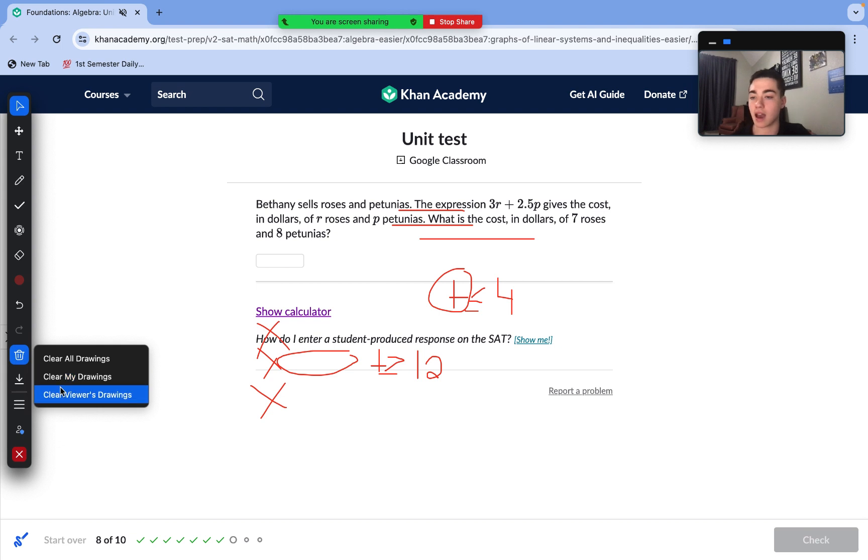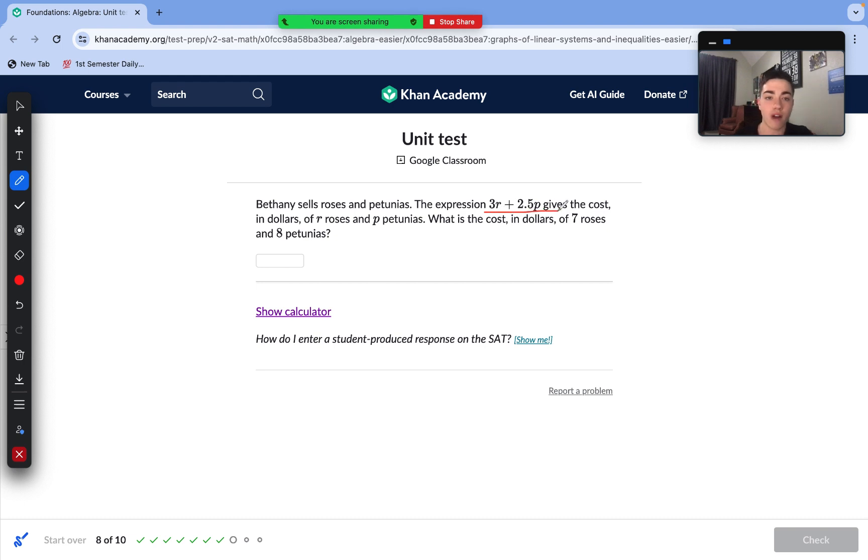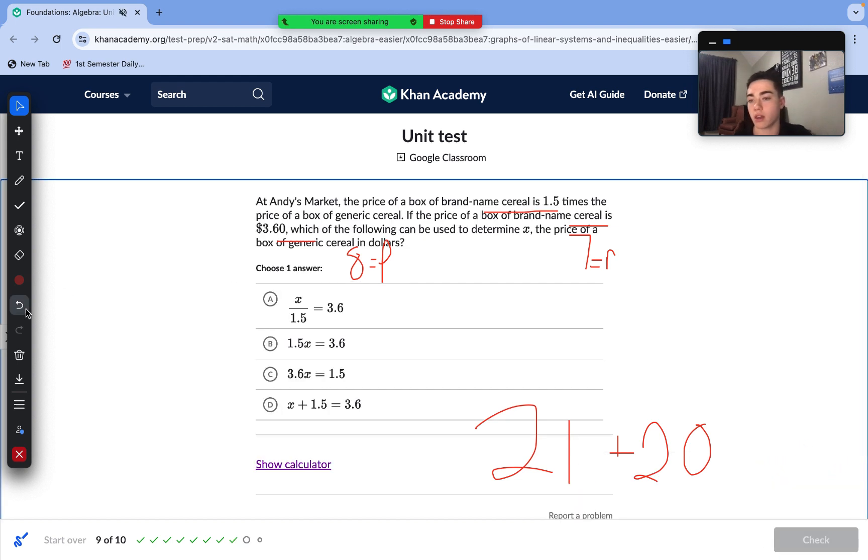Moving to question number eight here. Bethany sells roses and petunias. The expression 3R plus 2.5P gives the cost in dollars of R roses and P petunias. What is the cost in dollars of seven roses and eight petunias? So we have two variables here, R and P, and then we are given two values for those variables. 7 equals R, and 8 equals P. All we're going to do with these values is just substitute them into our expression. So we do three times seven, that's 21. And then we do 2.5 times eight, that's 20. So now we just do 21 plus 20. Our answer to that is 41. So the cost of seven roses and eight petunias is $41.